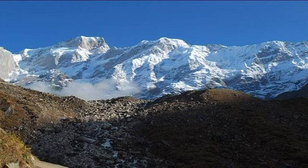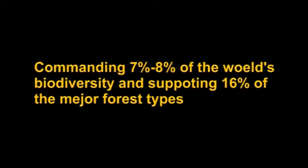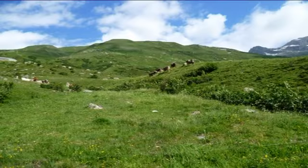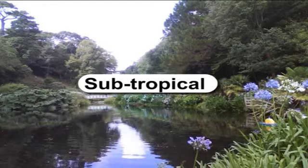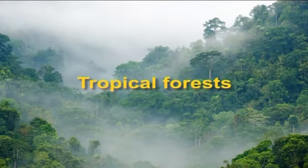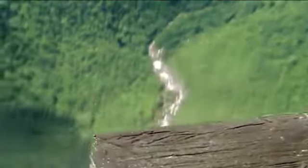India is one of the 17 mega-diverse countries in the world, commanding 7 to 8 percent of the world's biodiversity and supporting 16 percent of the major forest types, varying from alpine pastures in the Himalayas to temperate, subtropical and tropical forests, and mangroves in the coastal areas. However, the country is facing several challenges with regard to maintaining its mega-diverse status.